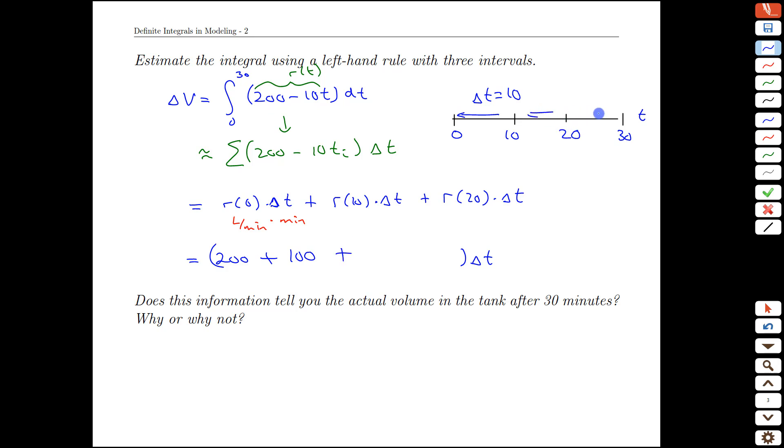And last but not least, on the third interval, we would use the 20 time point. 200 minus 20 times 10 is 200. That actually adds up to 0.